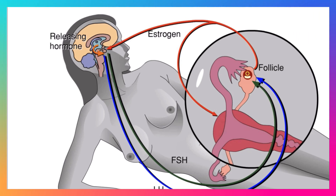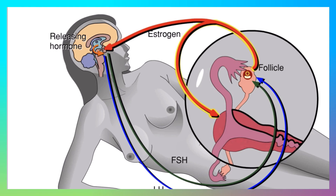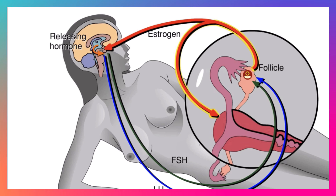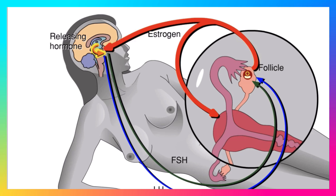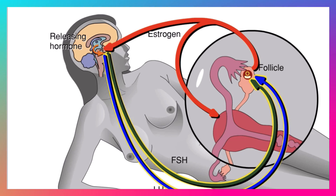As the follicle grows, it secretes more and more estrogen, stimulating further development and thickening of the uterine lining. Estrogen level reaches a peak just before the midpoint of the cycle. At this point, the response of the hypothalamus and pituitary to estrogen reverses — the higher level of estrogen actually stimulates the hypothalamus to signal the pituitary to secrete a burst of FSH and LH.